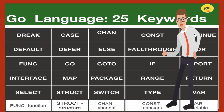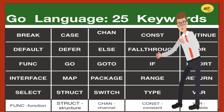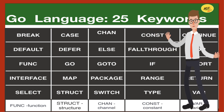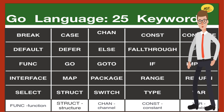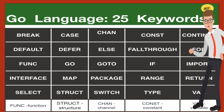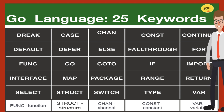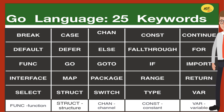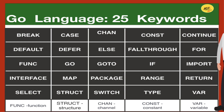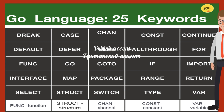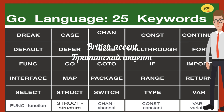Hi guys. I'm here. Let's get started to repeat 25 keywords of the Go language. I will speak with the British accent at normal speech tempo. Samantha will speak very slowly, then slowly, and finally at normal speech tempo. She will speak with the American accent. Let's get started to repeat 25 keywords. Please look at the table and listen to my British accent.